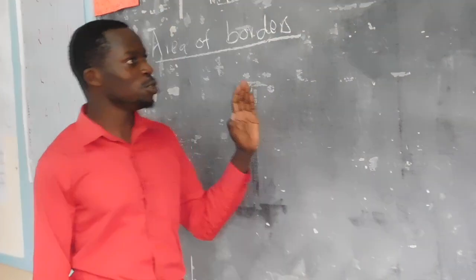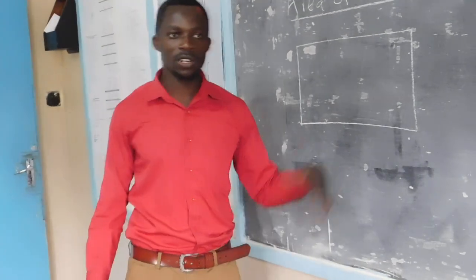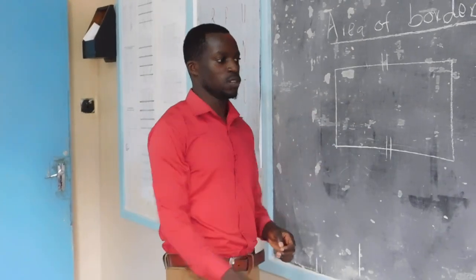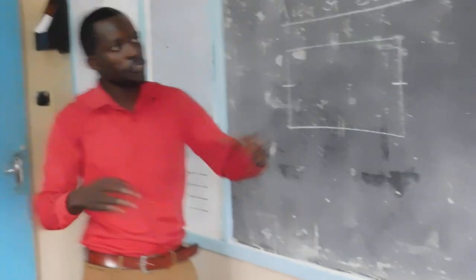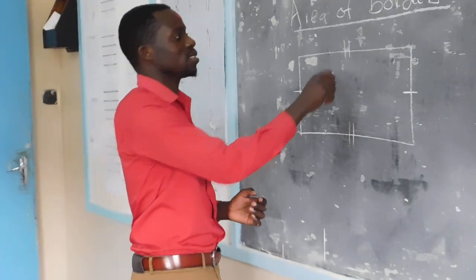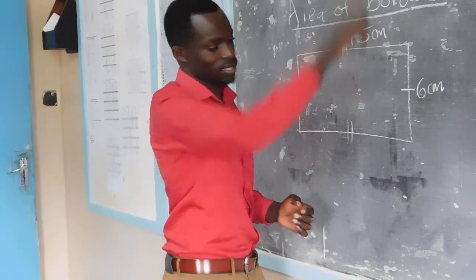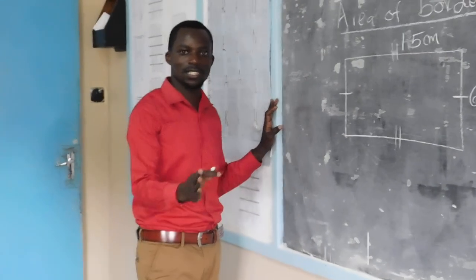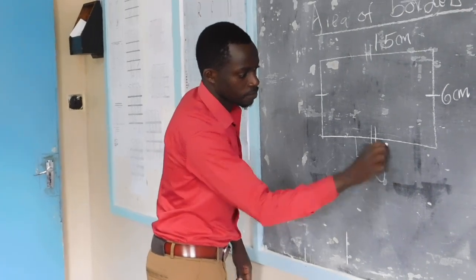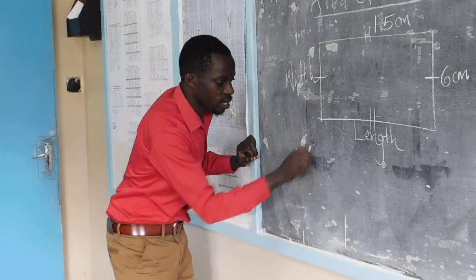I want to draw a rectangle here. This is a rectangle, and you will realize that one of the features of a rectangle is that two opposite sides are equal. Before I do the area of the borders, I want us to look at the area of a rectangle first. The longer side is the one we call the length, and this is the width.